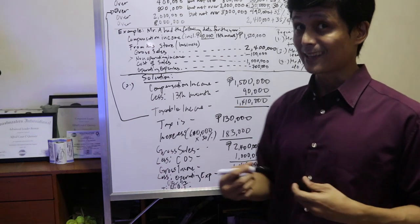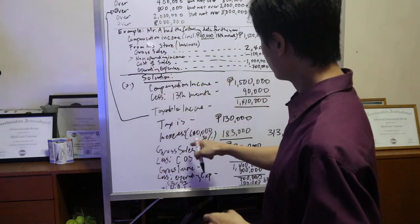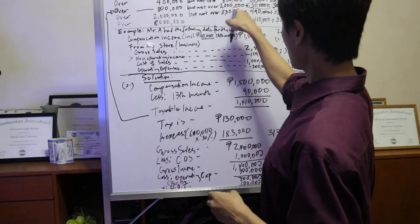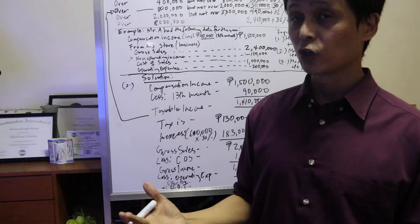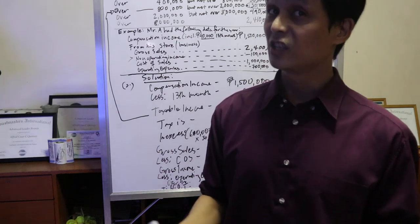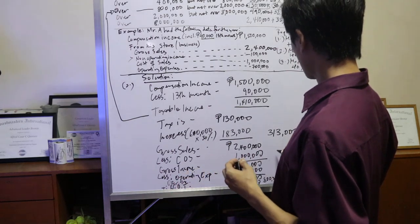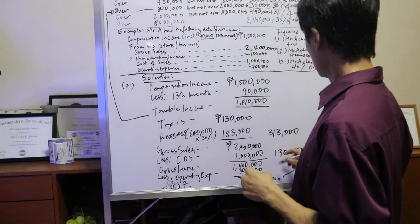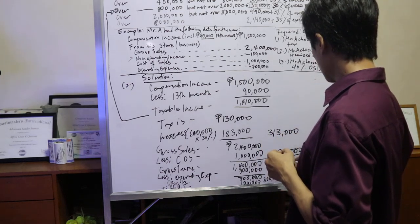Now, when you say taxable income, this is your basis for tax. So pupunta ba dito? Where's the 800,000? There, 800,000. So what's the tax? It's 130,000. Now, since wala nang excess because 800,000 taxable income less the minimum of 800,000 is zero. So kung ano yung makukuha mo dun, which is 130, that is already your tax for the business. So 130 plus 313, this would be 443,000.